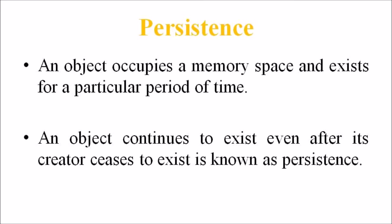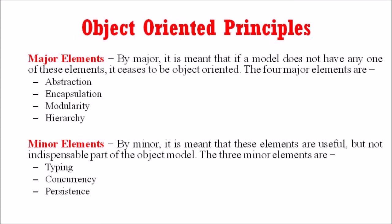The last minor element is persistence. An object occupies a memory space and exists for a particular period of time. In traditional programming, the lifespan of an object was typically the lifespan of the execution of the program that created it. In files or databases, the object's lifespan is longer than the duration of the process that created it. This property by which an object continues to exist even after its creator ceases to exist is known as persistence. In this lecture, we discussed the object-oriented principles and the categories of elements in an object-oriented system.